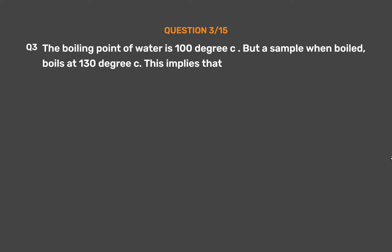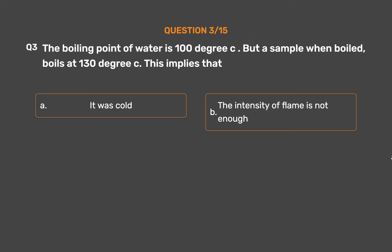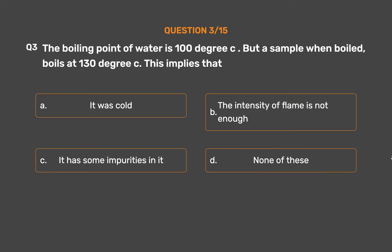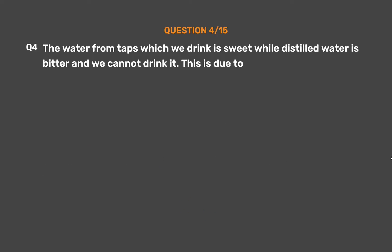Question number three: The boiling point of water is 100°C, but a sample when boiled boils at 130°C. This implies — option A: it was cold, option B: the intensity of flame is not enough, option C: it has some impurities in it, option D: none of these. The correct answer is option C: it has some impurities in it.